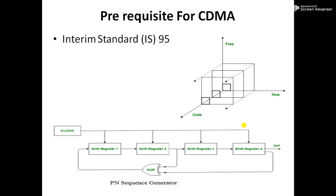DSSS stands for Direct Sequence Spread Spectrum — a spread spectrum technology in which the data to be transmitted is encoded using a spreading code and then decoded at the receiver using the same code. It is used to avoid interference, spying, and jamming. The spreading code is known only to the transmitter and receiver. CDMA uses the same bandwidth for all users; however, each user is assigned a separate code which differentiates them from each other.